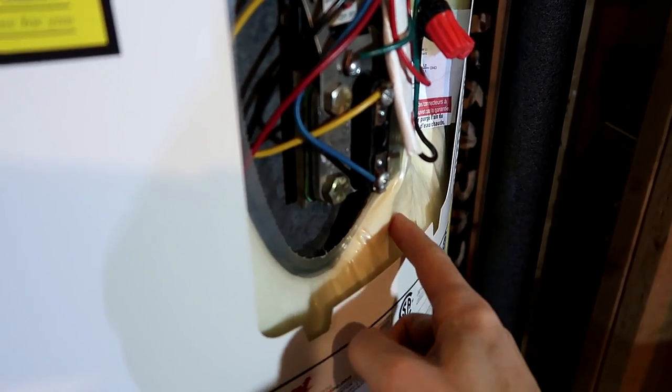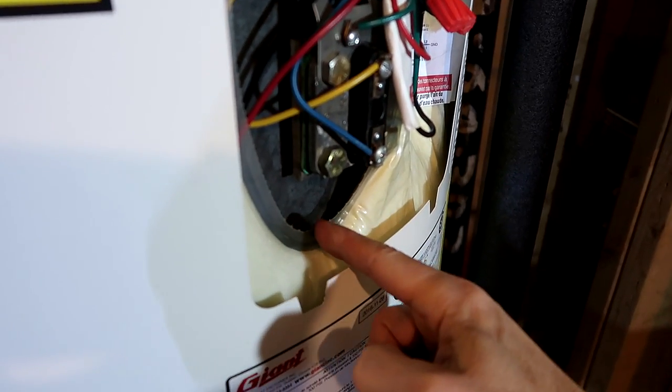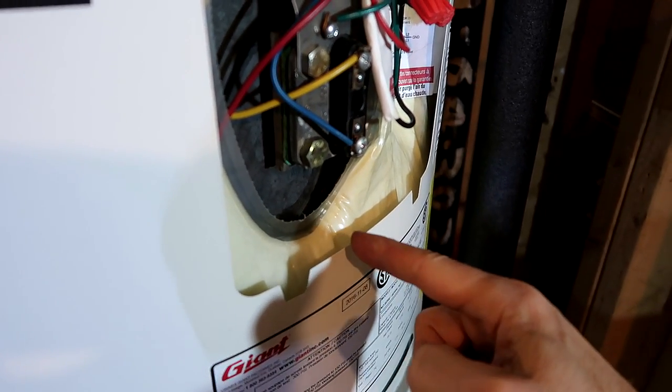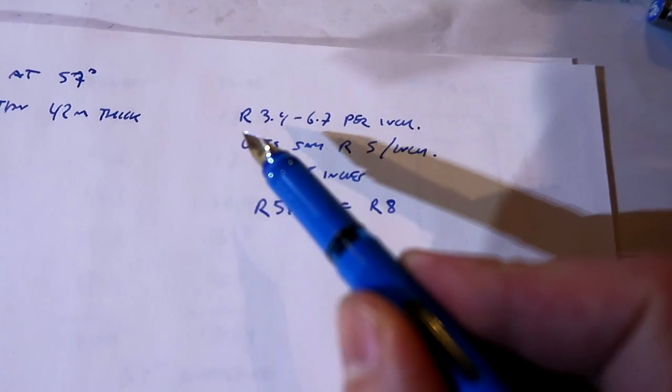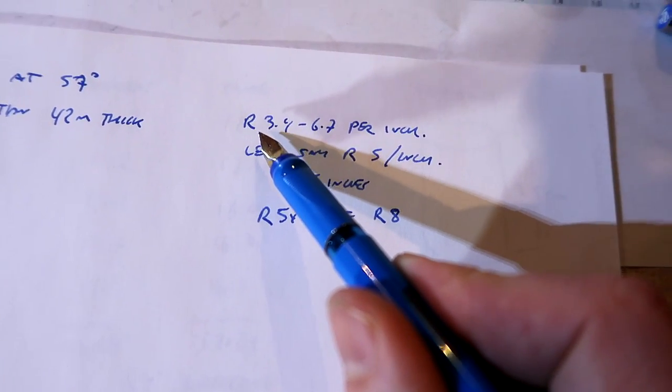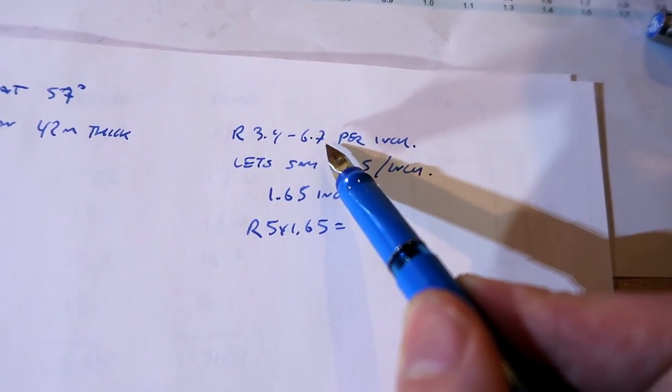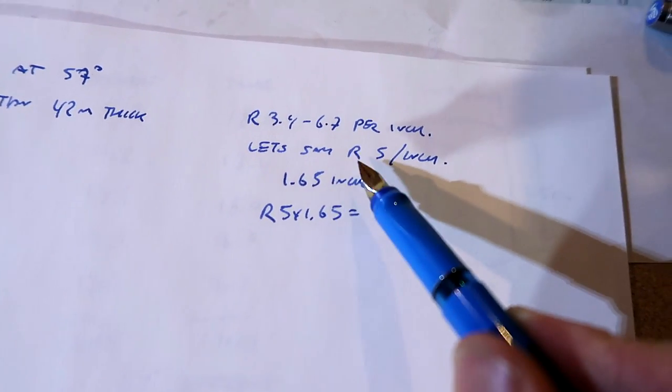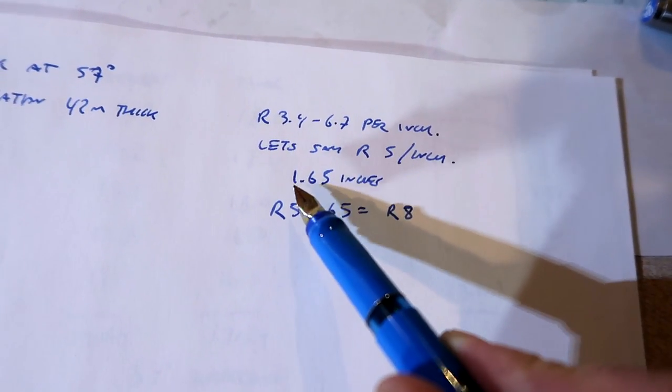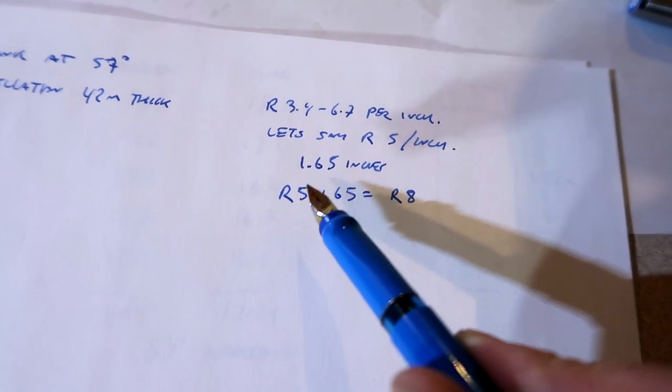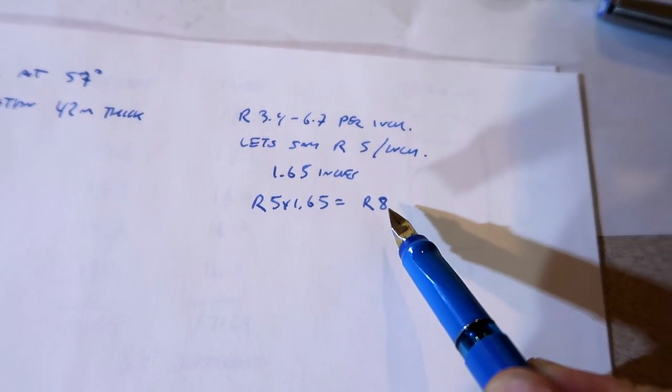The tank is insulated with polyurethane foam, and I measured that to be about 1.65 inches thick. Polyurethane foam, according to Wikipedia, has an insulation R value of 3.4 to 6.7 per inch. Let's say 5 per inch, times 1.65 inches, works out to R8.